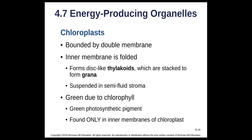Chloroplasts are found mostly in plants and are double-membrane organelles. The inner membrane folds to increase surface area, forming disk-like structures called thylakoids that stack together like checker chips into structures called grana. All thylakoids and grana are suspended in a semi-fluid called stroma. Chloroplasts are green because they contain chlorophyll — a photosynthetic pigment in the inner membranes — whose main job is to capture sunlight energy.